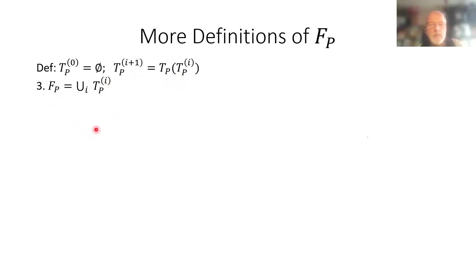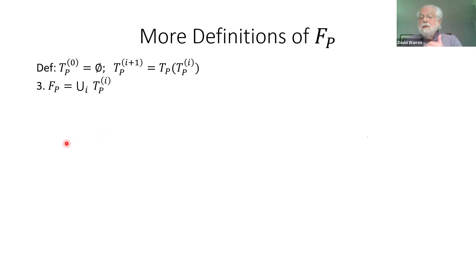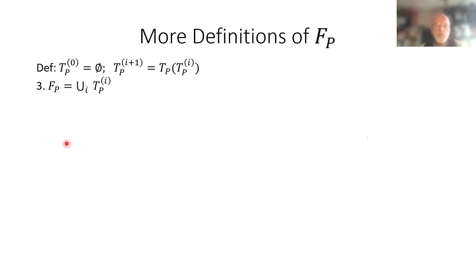Do we need transfinite powers? I don't think we do here. In well-founded semantics we do, but we're not doing well-founded semantics. These are all monotonic operators — we haven't talked about negation at all. We're just doing positive operators, and everything converges at omega. Monotone and continuous is sufficient for natural number powers to be enough; if only monotone, transfinite powers may be needed. These operators are also continuous.